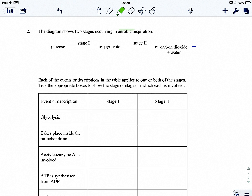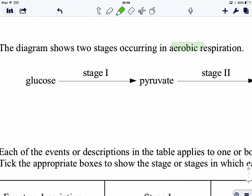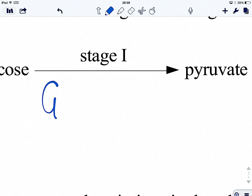And we've got two stages here of aerobic respiration illustrated. So we'll just highlight the fact that it's aerobic respiration. Our first stage, we've got glucose being converted to pyruvate. Now immediately, your alarm bells in your head should be ringing and saying, right, this is glycolysis. So we'll just scribble that in.